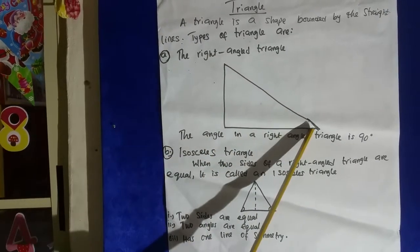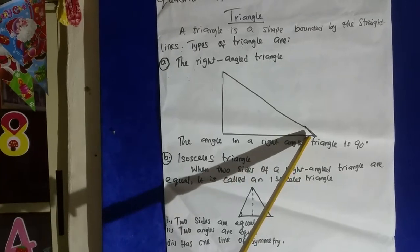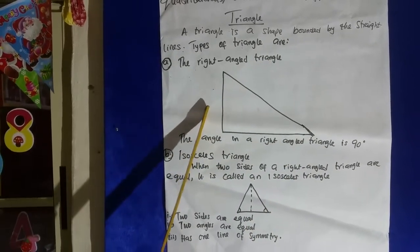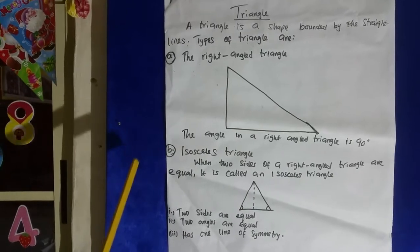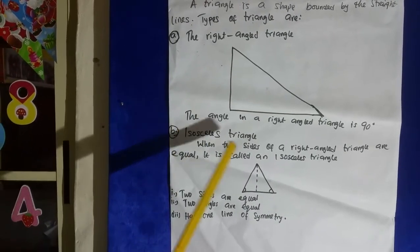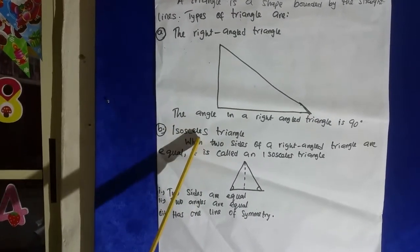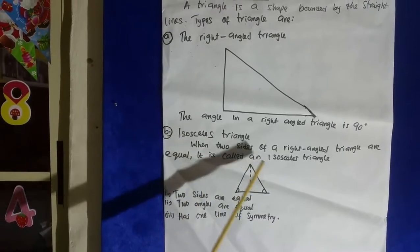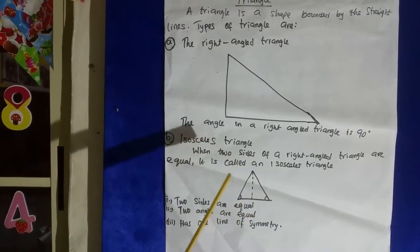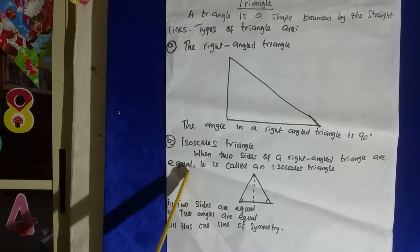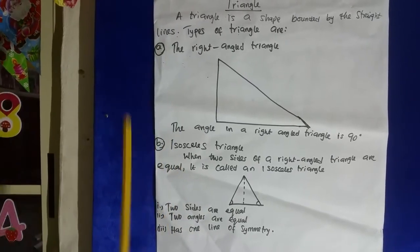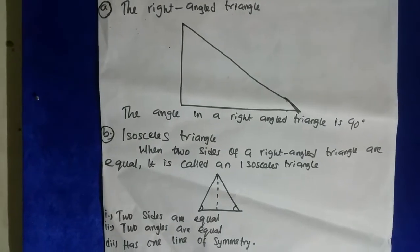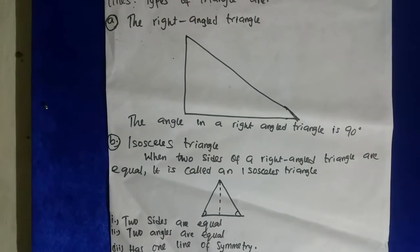It is a right angle triangle. Now we go to the isosceles triangle. When only two sides of the triangle are equal, it is known as an isosceles triangle.